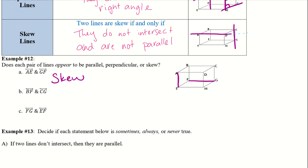BF and CG: BF is over here, CG is over here — those lines definitely look parallel. They do not intersect with one another, and they are on the same plane, so therefore they are parallel with one another. FG and EF: these ones do intersect and they create a right angle at F, so these ones are perpendicular.